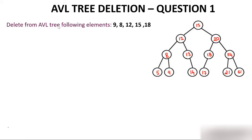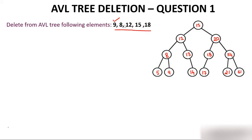Here you have a tree and your job is to delete certain elements from the AVL tree. Deletion requires you to keep some points in mind: delete one node at a time. While deleting a node, check that the balance factor of the tree is not disturbed. Deletion may lead to violation of the AVL tree balance factor, so after deletion always check if the balance factor is disturbed, and if so, rotate accordingly.